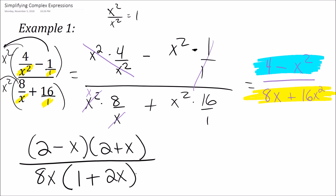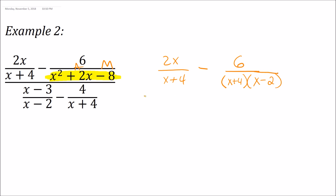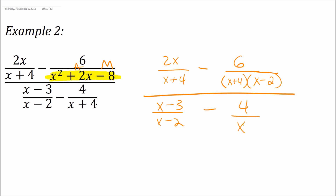Let's take a look at another example — example 2. First, if you can factor down any denominator, make sure you do. I see a long trinomial here, so I'm going to go ahead and factor that down using trinomial factoring and rewrite the problem. This gives us 2x over (x plus 4), minus 6 over... using the AC method: what adds to 2 and multiplies to negative 8? That would be (x plus 4)(x minus 2). On the bottom it's x minus 3 over (x minus 2), minus 4 over (x plus 4).